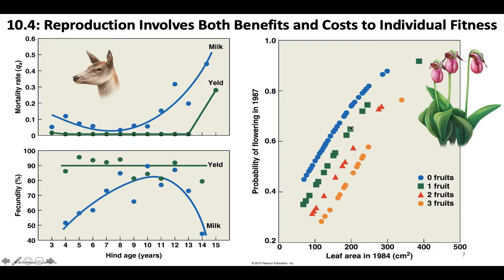This other data set is from an orchid species. The probability of flowering increases with plant size, but for a given size, the probability decreases as a function of previous allocation to reproduction. Plants that have produced three fruits already have a much lower probability of flowering overall given their leaf area, because they've already invested a lot of their energy into producing fruit.